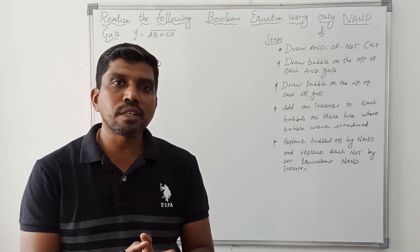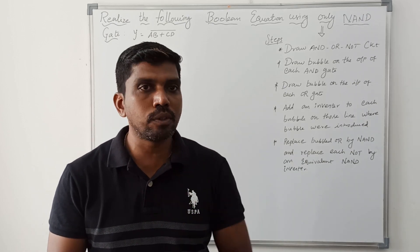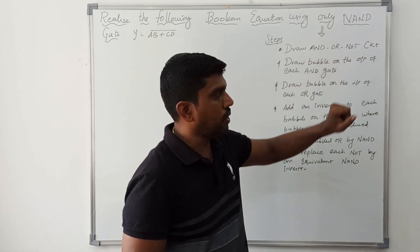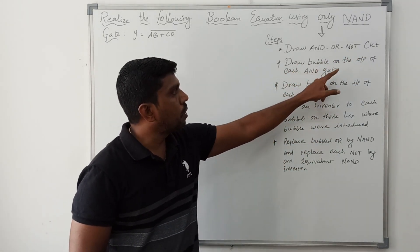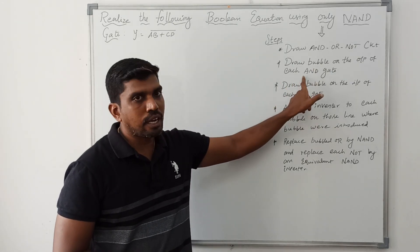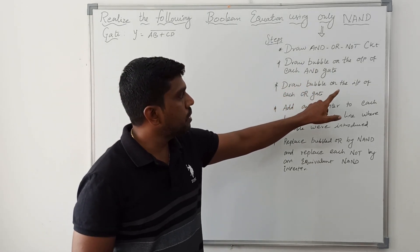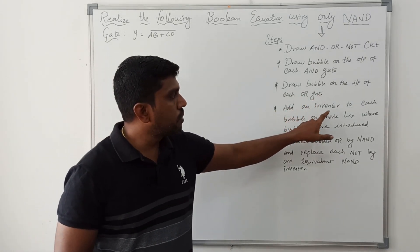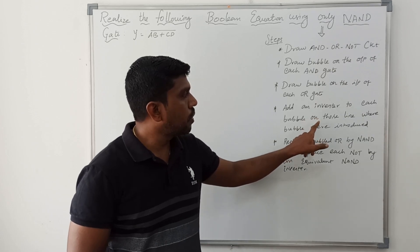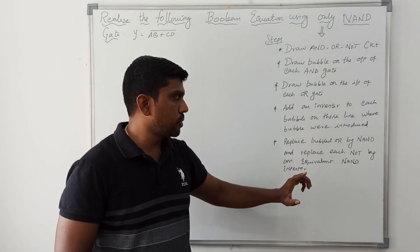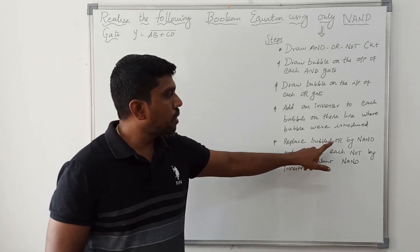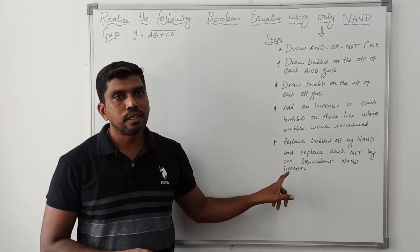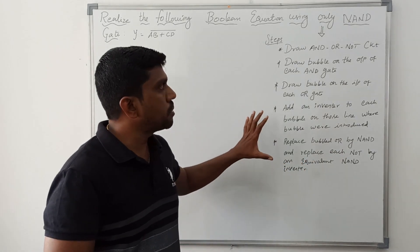So before solving the problem, first I recall the steps. What are the steps needed to solve the problem? First step: draw AND-OR-NOT circuit. Second step: draw bubble on the output of each AND gate. Third step: draw bubble on the input of each OR gate. Fourth step: add an inverter to each bubble on those lines where bubbles were introduced. Final step: replace bubbled OR by NAND and replace each NOT by an equivalent NAND inverter. These are the steps — it is very important.